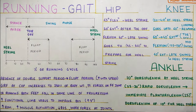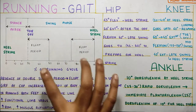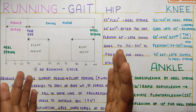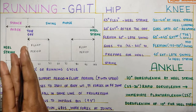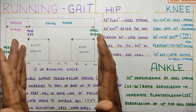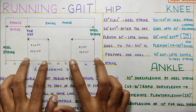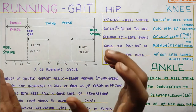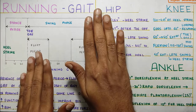Starting with the phases, there is again a stance phase and a swing phase like in normal gait. But in running gait, the stance phase is significantly reduced and the swing phase is extended. In the swing phase, the double support time is replaced by a float period, meaning you are in the air during that time and none of your feet will be in contact with the ground.